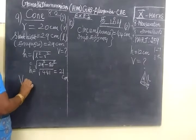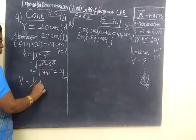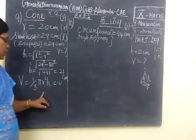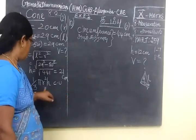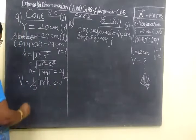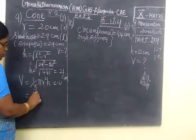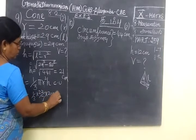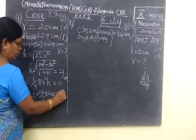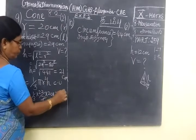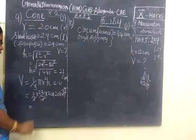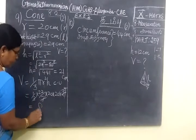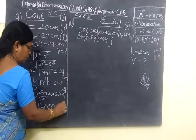Now we have to find volume. Volume equal to cone, 1 by 3 π r square h. For cylinder simply π r square h. For cone 1 by 3 π r square h. Equal to 1 by 3, 22 by 7, 20 into 20, h equal to 21. So we can cancel, 3 and 3 cancel. So for the 9th sum answer.